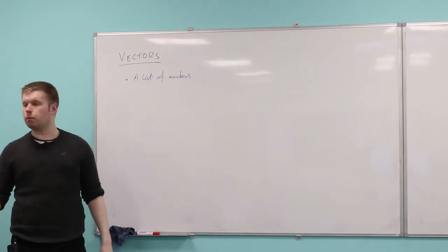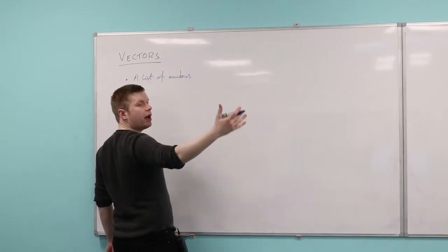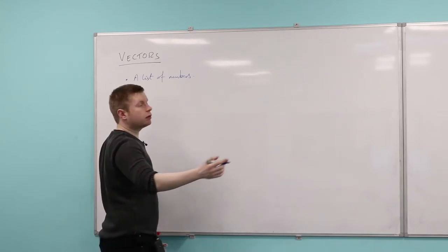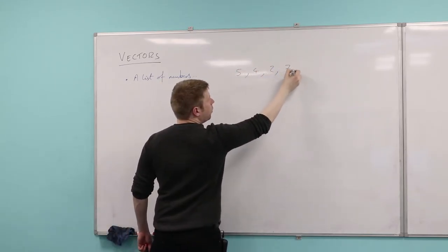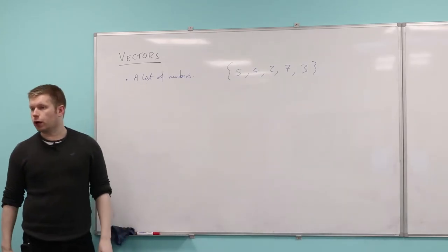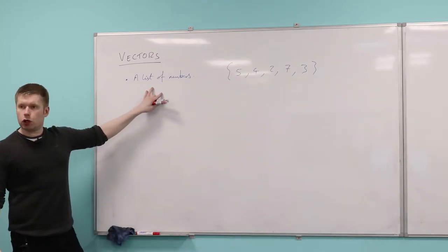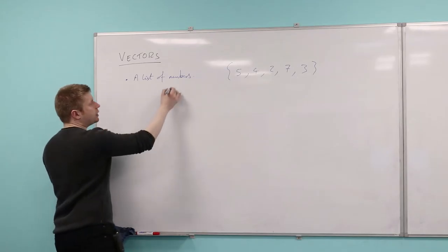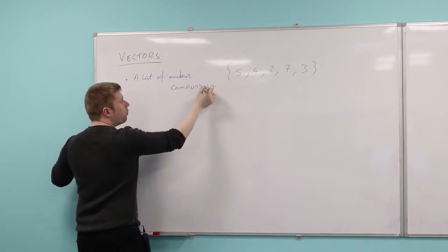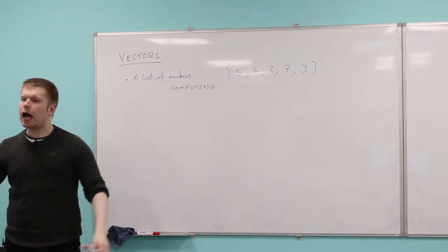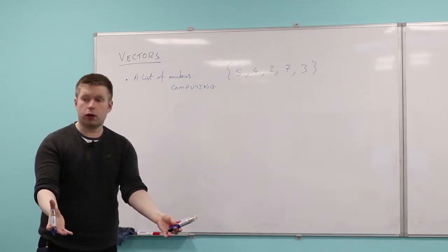So just simply a list of numbers. For example, just throw five numbers out at me — five, four, seven, three. So this here would be a vector, okay? It's just a list of numbers. No particular order going on, it's just simply a list of numbers. This is a particularly useful definition in the context of computing. So if any of you have done any coding before, you'll probably be familiar with the idea of a vector as just simply a way of storing numbers in a list.